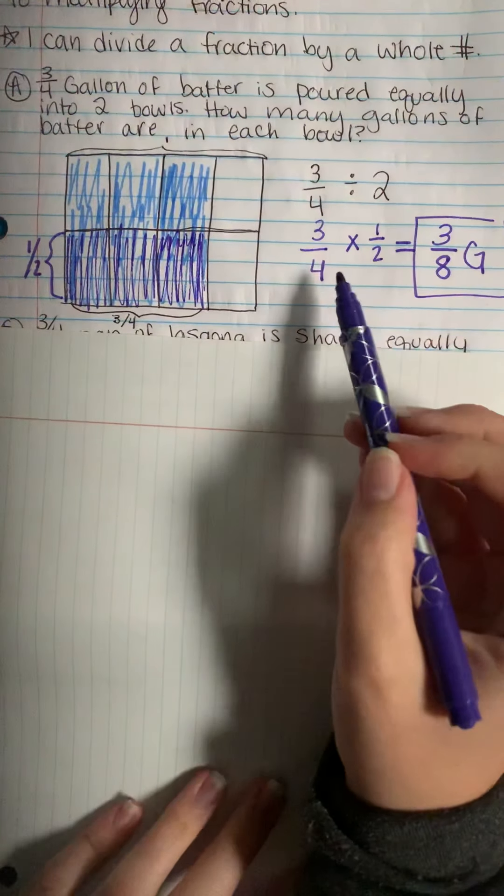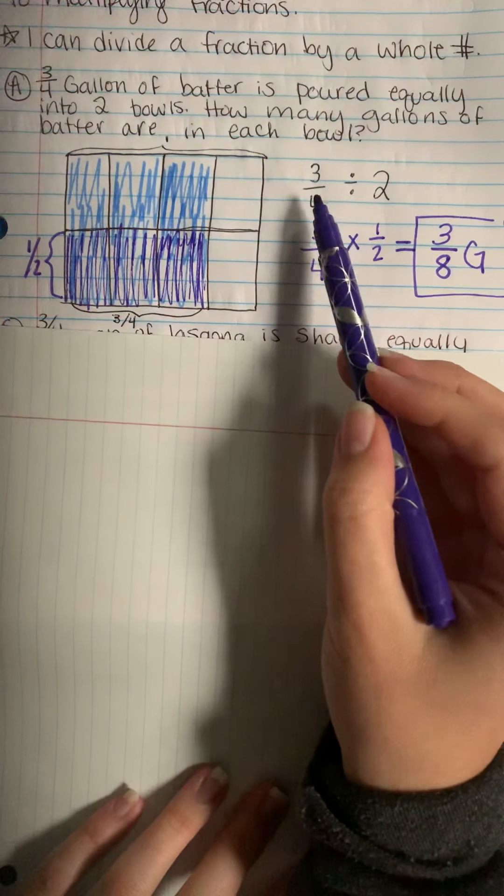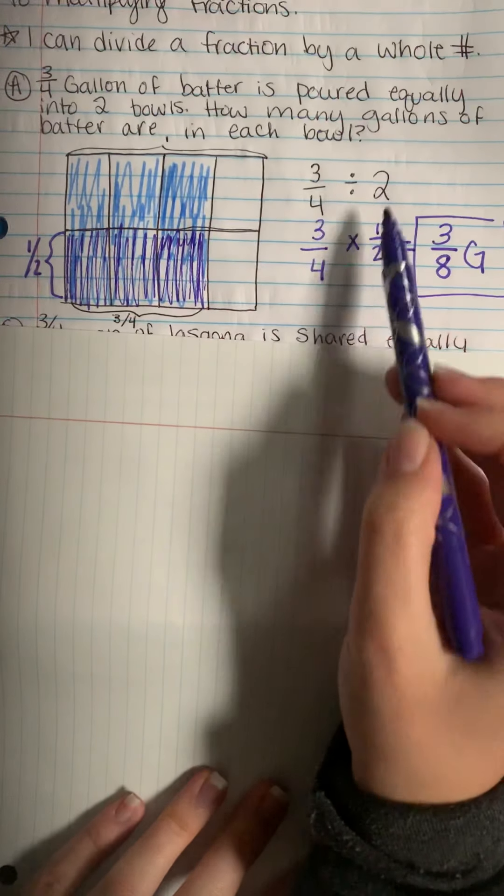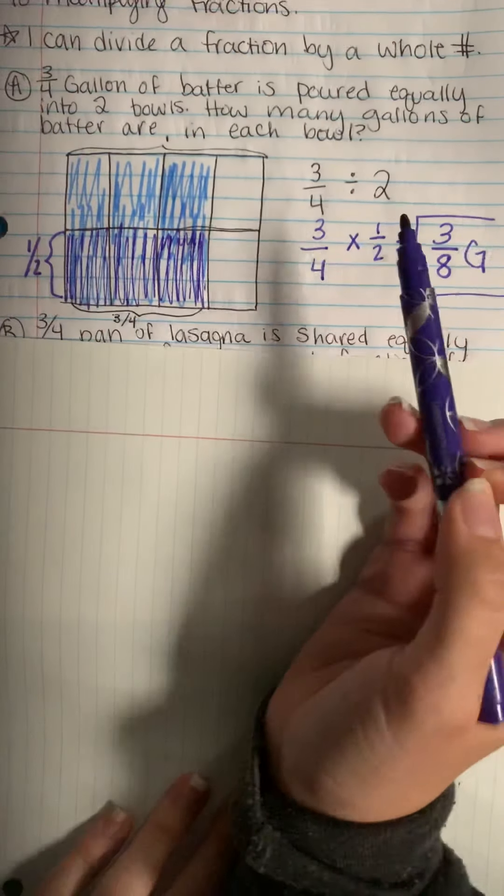And you can kind of see I checked our problem using the standard algorithm while we were going. So keep change flip still happened, but now we're showing it in our area model as well.